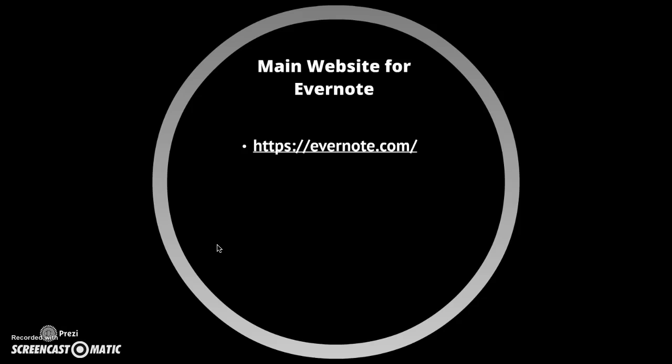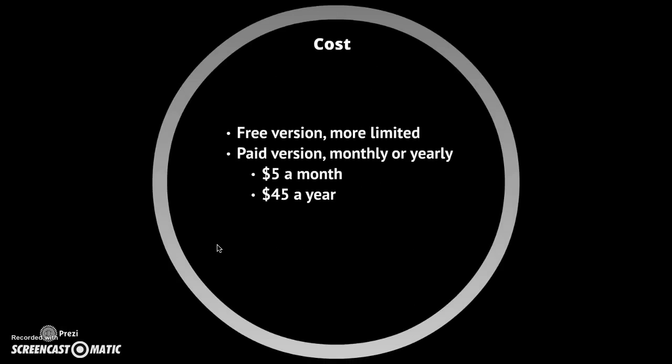The main website for Evernote is pretty self-explanatory — all you do is go to Evernote.com and it will take you through a process of signing up and asking you about different memberships. To start off, there's a free version, though it's more limited. If you need to share things or access more features, you can get the paid version, which you can subscribe to either monthly or yearly. It's five dollars a month, or about forty-five dollars a year if you're trying to save some money and plan to use this tool often for larger presentations.